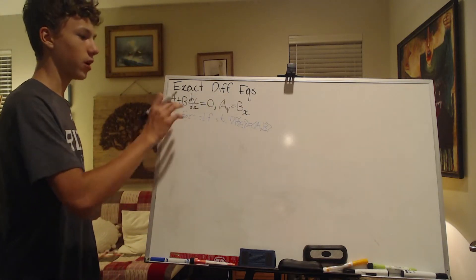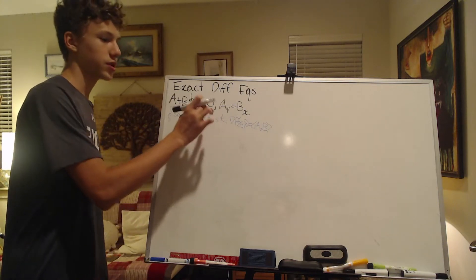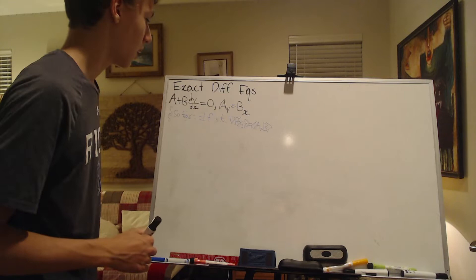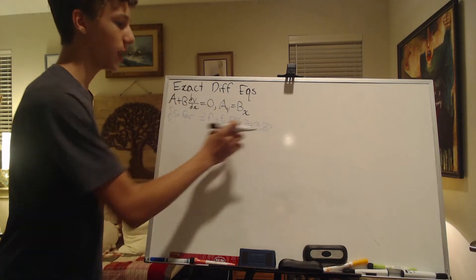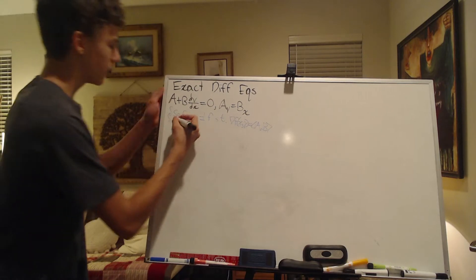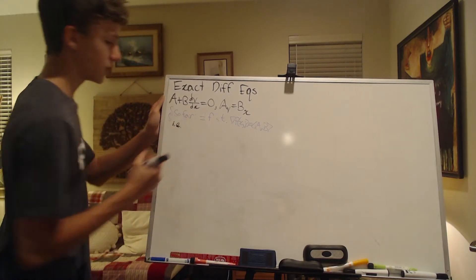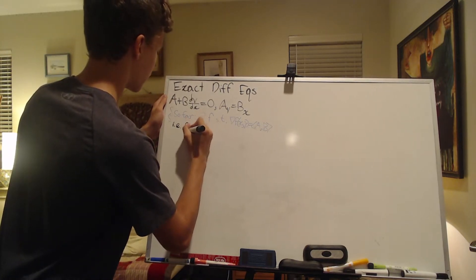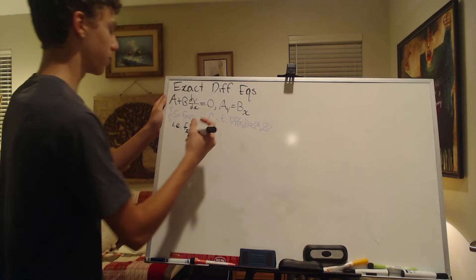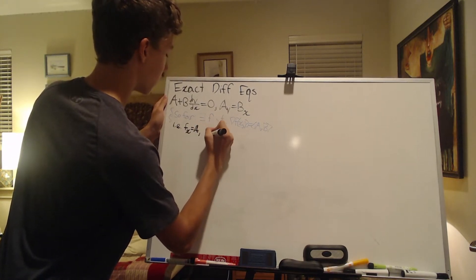Recall that the main gist of that video was proving that there exists a potential function such that the gradient of that potential function is this vector field AB. And i.e., let's remind ourselves, we also noted that this is equivalent to the notion that the partial derivative of F with respect to X is A, and F sub Y is B.